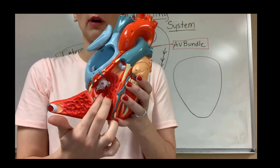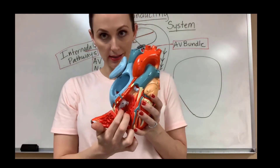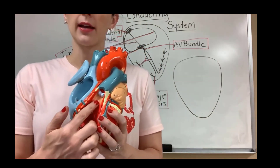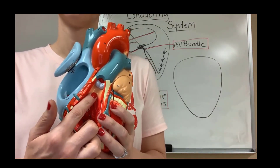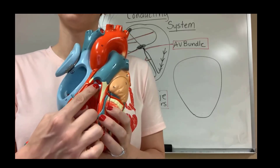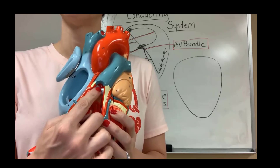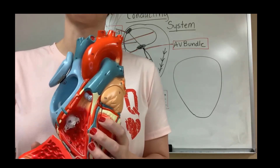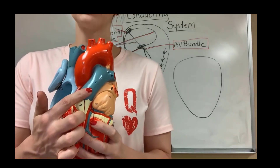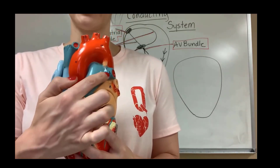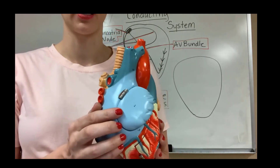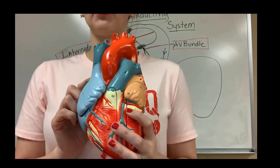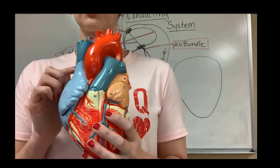We take that deoxygenated blood and move it through the tricuspid valve into the right ventricle. From the right ventricle the blood moves up through the conus arteriosus, then through the pulmonary — or pulmonic — valve, into the pulmonary trunk. The pulmonary trunk then carries this deoxygenated blood through the left and right pulmonary arteries, which we can see peeking out right here.